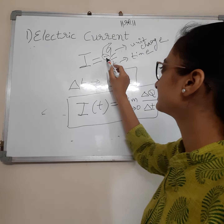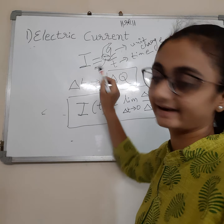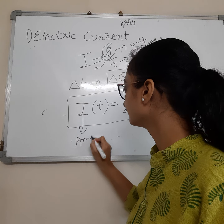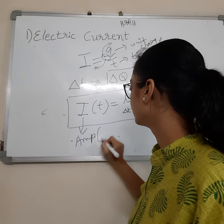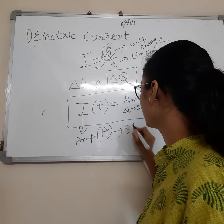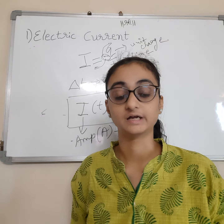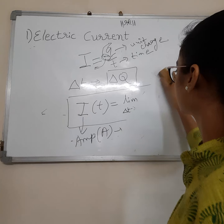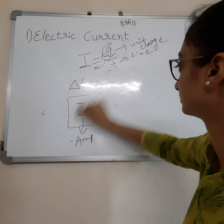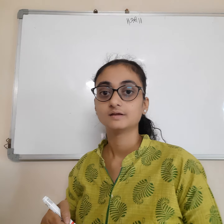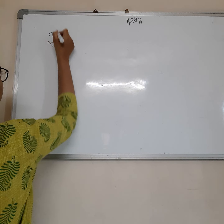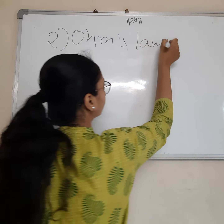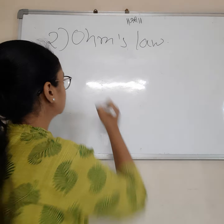If we take moving charge, then the time interval will also be delta T. If we take delta T as the time interval and delta Q as the charge, then current I is equal to limit as delta T tends to 0 of delta Q by delta T.